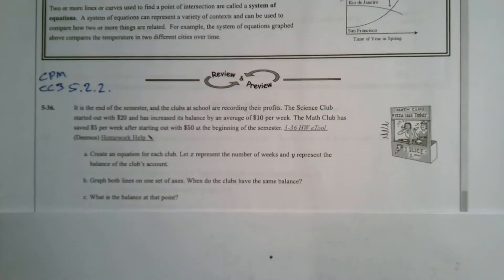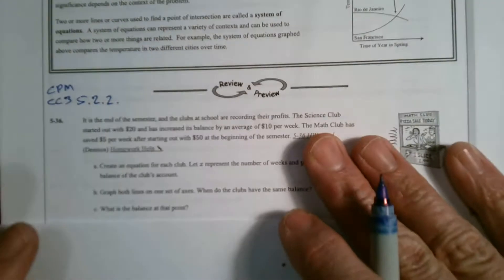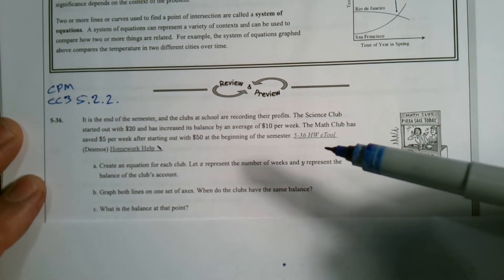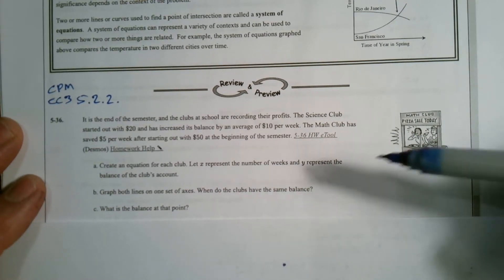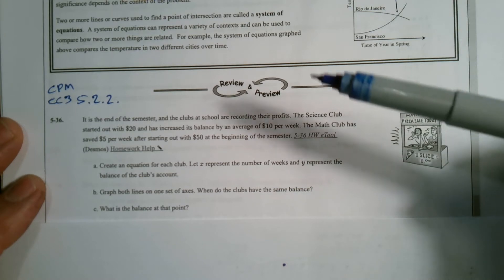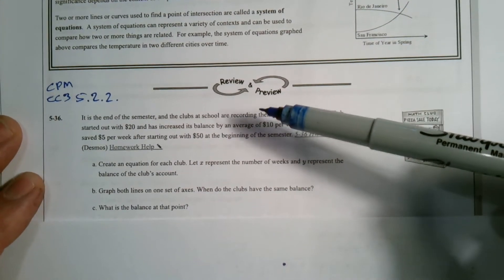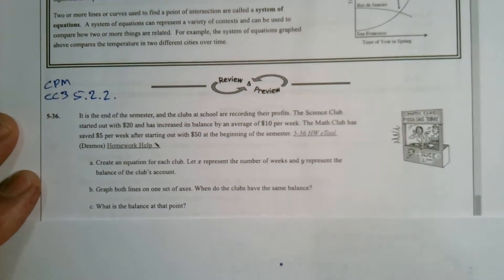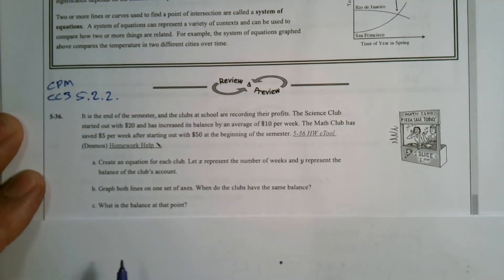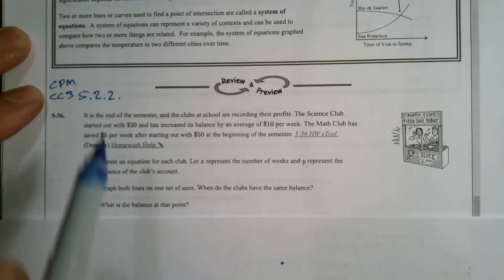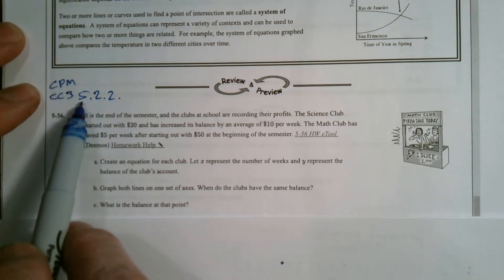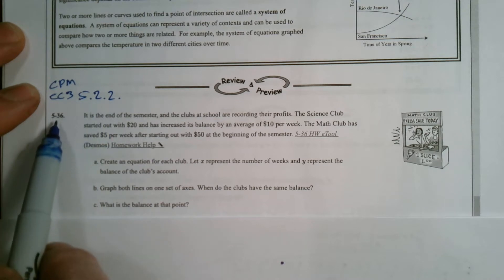Hi folks, Mr. Dell here. We are looking at today, this video, a situation where we're going to be comparing a system of equations and looking at their intersection point and interpreting what that is, finding the rules for this situation. I'm using CPM Course 3, Section 5.2.2, Number 5-36.